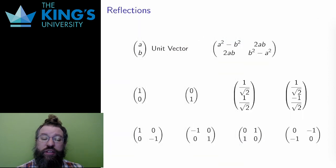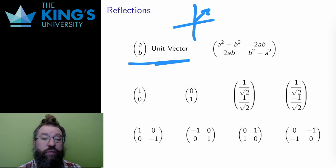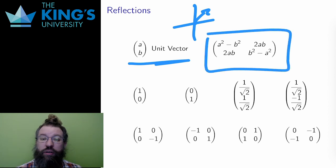A reflection is over some line through the origin. A line can be indicated by a direction, and when I want to specify a direction, I do so with a unit vector, a vector of length 1. So if I have a vector of length 1 with coordinates (a, b), then the reflection over the line determined by that vector is the matrix with entries a² - b², 2ab, 2ab, and b² - a².